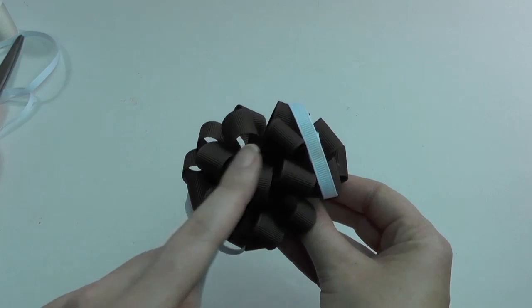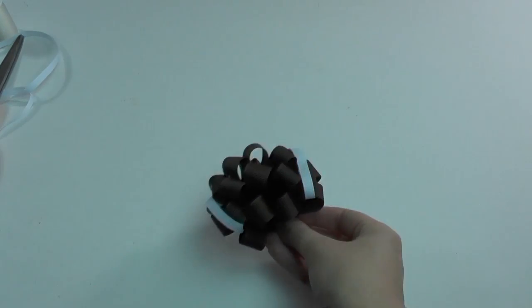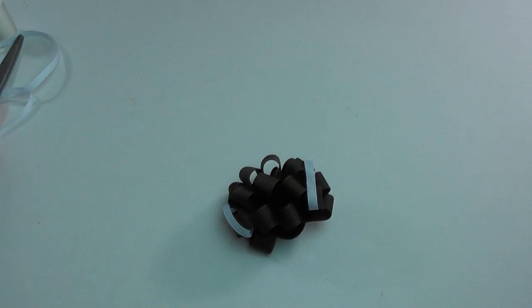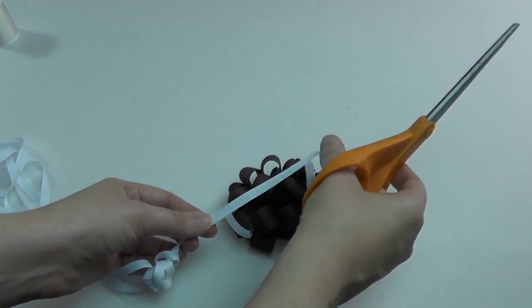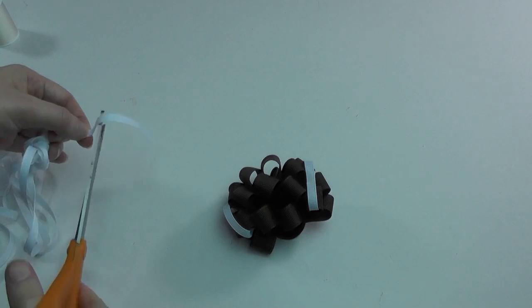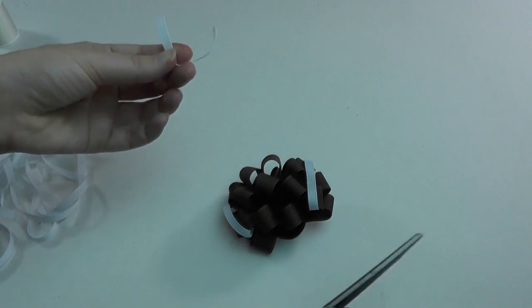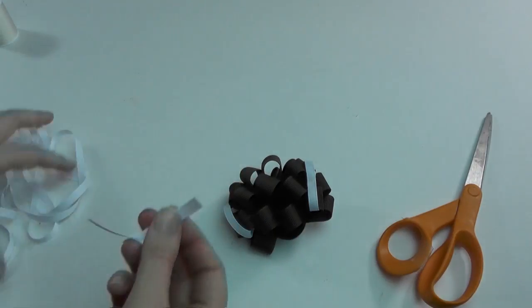Now we are going to add the middle stitching and again I am going to use that 1/4 inch white ribbon. And to determine the length, I am just going to measure the width of my bow, which is probably about two and a half inches.